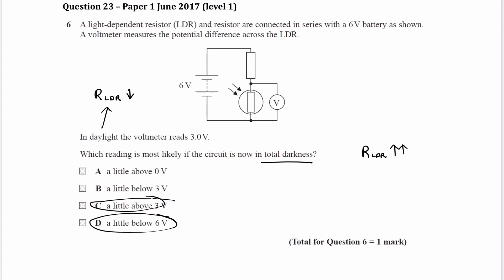So it can't be A or B. How can we now decide between C and D? Because the resistance increases significantly as the light intensity changes very significantly, then the voltage across that component will also increase significantly. And so it would therefore be D and not C.